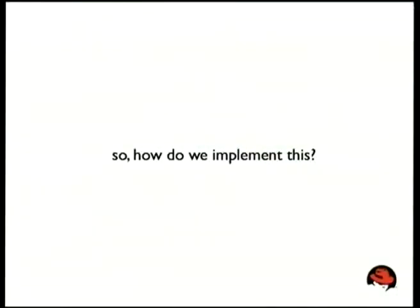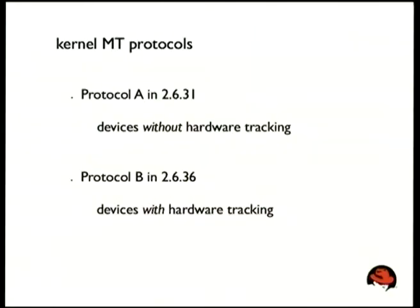After all these problems, how do we actually implement this? Let's see what's happening at the lower level, because the technology itself is solvable. If you go to the lowest layer — the kernel — what we have with kernel 2.6.31 is what's called multi-touch protocol A. That was the first one — it's for devices without hardware tracking, devices that just always give you the whole frame.